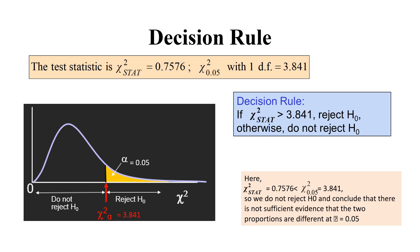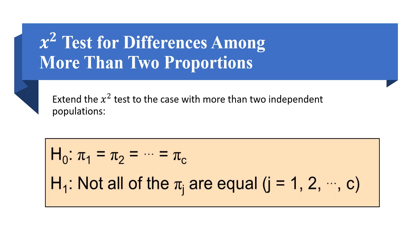The decision rule states that if the test statistic exceeds the critical value for the degree of freedom, we reject the null hypothesis; otherwise we do not. For one degree of freedom at the 0.05 significance level, the critical value from the chi-square table is 3.841. We calculated a test statistic of 0.7576. Since 0.7576 is less than 3.841, we do not reject the null hypothesis and conclude there is not sufficient evidence that the two proportions differ at α = 0.05.